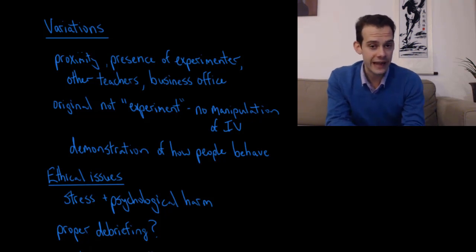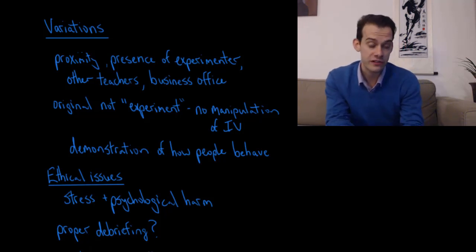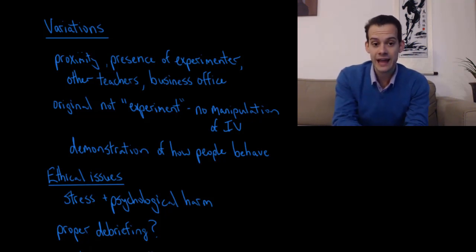Now Milgram did a number of variations of the study where he varied things like the teacher's proximity to the learner, whether they were in the same room, the presence of the experimenter in the room with the teacher or if the experimenter delivered instructions via telephone, the presence of other teachers working with other learners in the same room, or whether it was conducted in a research laboratory at Yale or in a business office in Bridgeport, Connecticut.